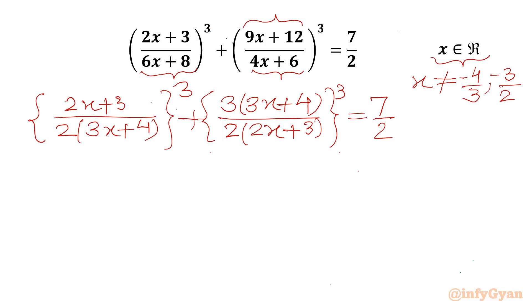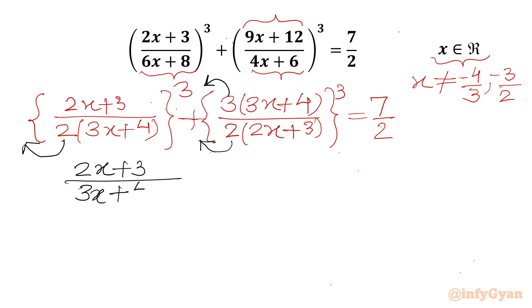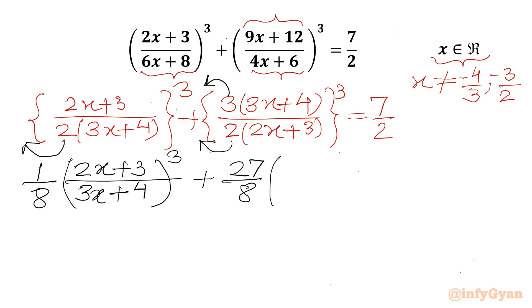Now I take the 2 out from the denominator — 2 cubed is 8 — and the 3 comes out as 27 (3 cubed is 27). So I can write (2x+3)/(3x+4) whole cube times 1/8, plus 27/8 times (3x+4)/(2x+3) whole cube, equal to 7/2.